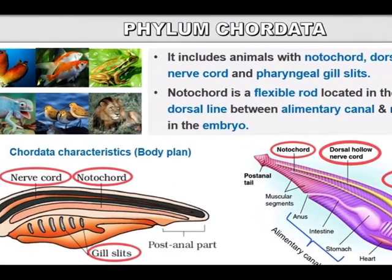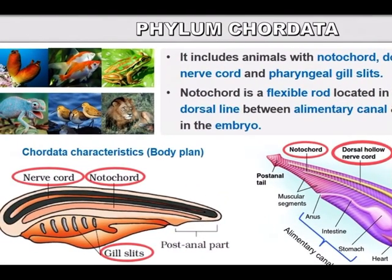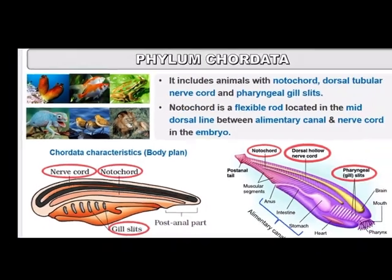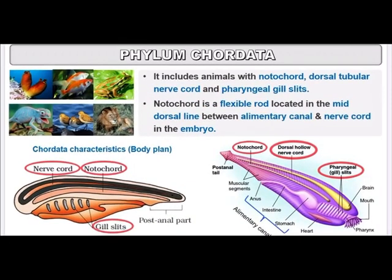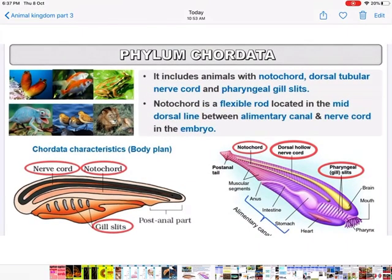In the diagram, the three parts show the nerve cord, notochord, and gill slits. The notochord is a flexible rod located in the mid-dorsal line between the alimentary canal and nerve cord in the embryo.